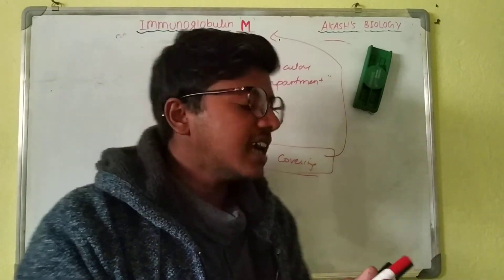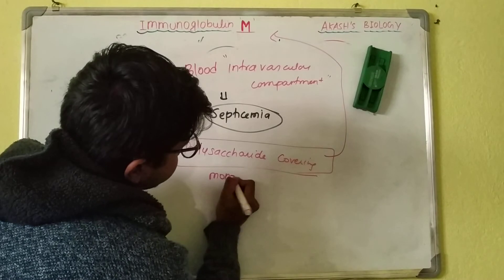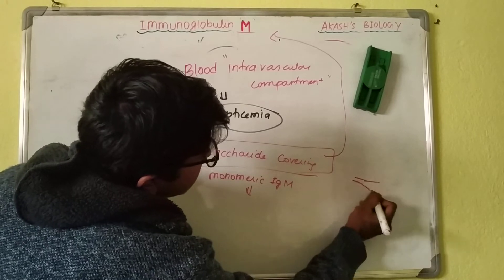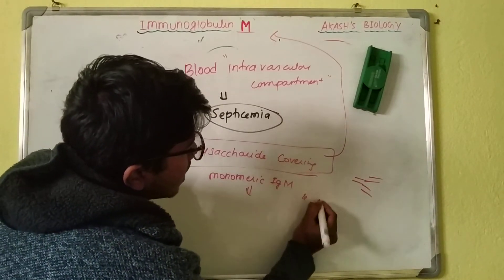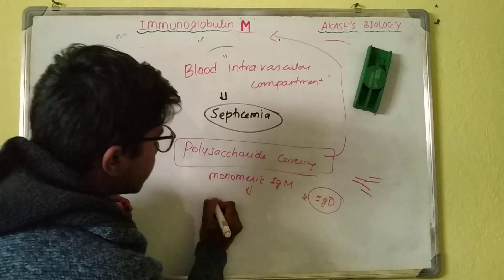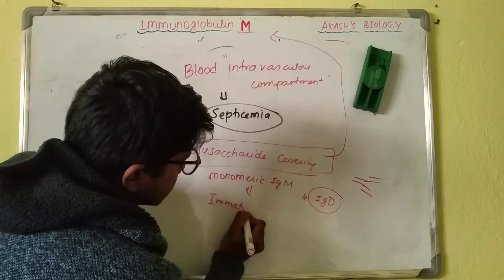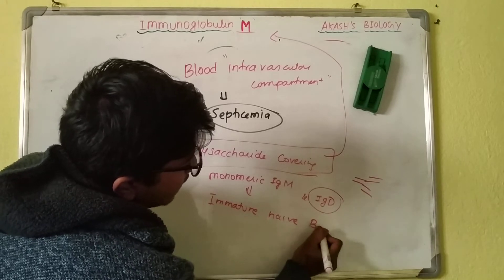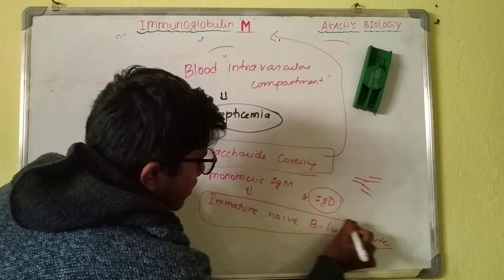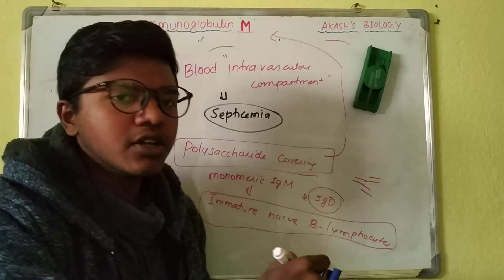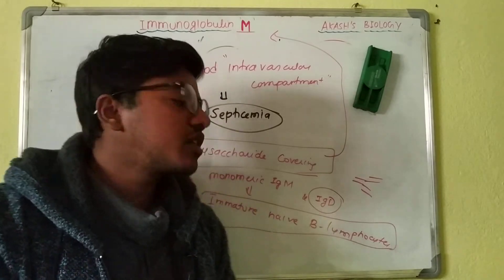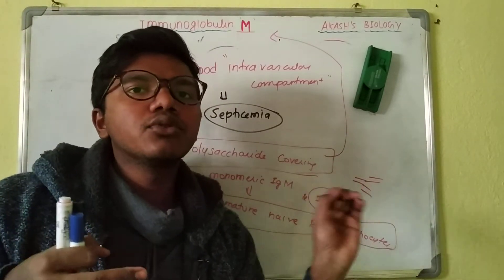There is also a monomeric form of IgM, where IgM is present as a single antibody unit. Monomeric IgM is present alongside IgD on immature or naive B lymphocytes — B lymphocytes that have not yet encountered or been processed to encounter any antigens.